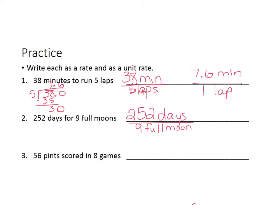For the unit rate, you would take your 252 divided by 9. 9 goes into 25 two times, which is 18. Subtract, you get 7 and bring down your 2. 9 goes into 72 eight times. So your unit rate would be 28 days for every one full moon.